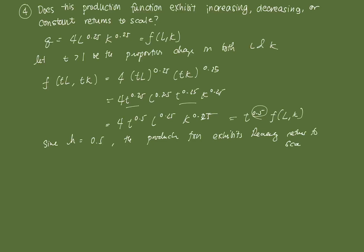What does decreasing returns to scale mean? If both labor and capital increase by the same proportion T > 1, the output only grows by T raised to 0.5, which is less than T raised to 1 (the input proportion). Therefore, the output increase will be less than the increase in inputs — that's the rationale for why it displays decreasing returns to scale.